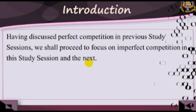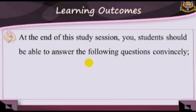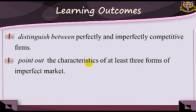Learning Outcomes. When you have studied this session, you should be able to: 1. Distinguish between perfectly and imperfectly competitive firms. 2. Point out the characteristics of at least three forms of imperfect market.